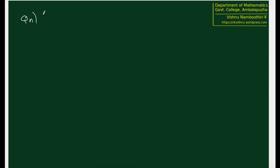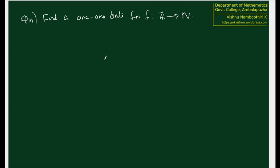Now we have a question: we are going to reverse the direction. Find a one-to-one onto function f from Z to N. We did it from N to Z; now the question is to find such a function in the reverse order. We can make use of whatever we have done previously and easily find such a function. This is left as an exercise.